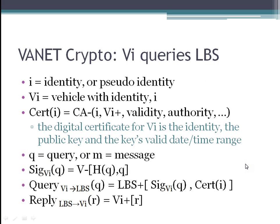Now, how do Vonets handle crypto? You remember the structure of a Vonet where you have a car, an LBS (location-based service), and a bunch of infrastructure in between. If we call I the pseudo-identity and VI the vehicle that has that particular pseudo-identity, then we can call cert(I) the digital certificate for that vehicle. That's going to include not only the identity and the public key, but also the validation period, what services they're authorized to use, and more. For the sake of this discussion, let's call a location-based query request Q — we could have used M but we're going to use Q for this discussion.